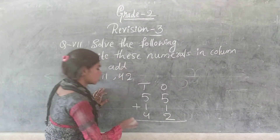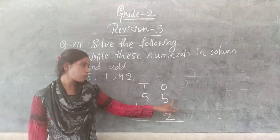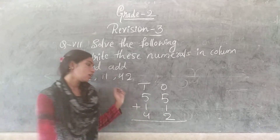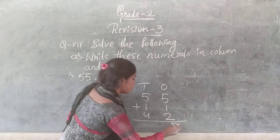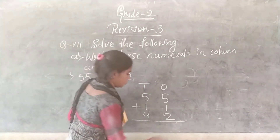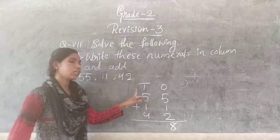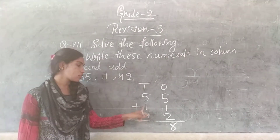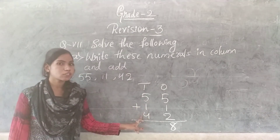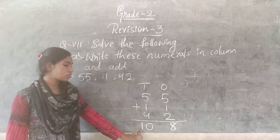Now add all the numbers. 5 plus 1 is 6, and 6 plus 2 is 10. Write 0 in the 1s place and carry 1 to the 10s place. Then 5 plus 1 is 6, plus 4 is 10, plus carry 1 is... and the answer is 108.